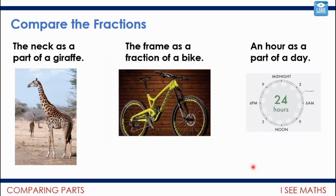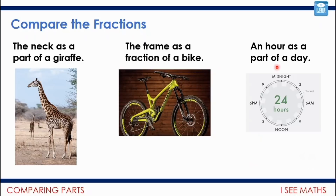Here are three examples to compare as fractions: the neck as a part of a giraffe, the frame as a fraction of a bike, and an hour as a part of a day. I'd say the smallest fraction is definitely an hour as part of a day — exactly one twenty-fourth. The other two I have to estimate. The neck looks to be slightly less than half of a giraffe, while the frame seems slightly more than half of a bike — though they're fairly close and you might disagree.